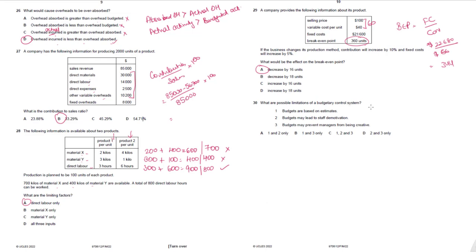Question 30. What are the possible limitations of a budgetary control system? Budgets are based on estimates — correct, as you are forecasting future performance. Budgets may lead to staff demotivation, especially if goals are unrealistic — correct. Budgets may prevent managers from being creative, particularly if targets are too easy and require no effort — correct. All three statements are valid limitations. Answer: 30C (1, 2, and 3).